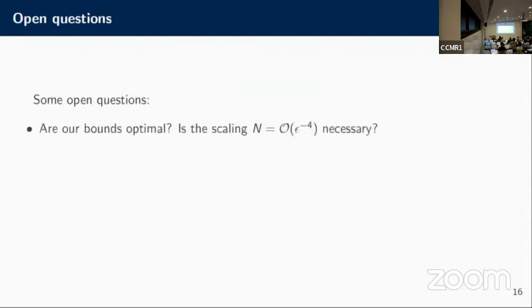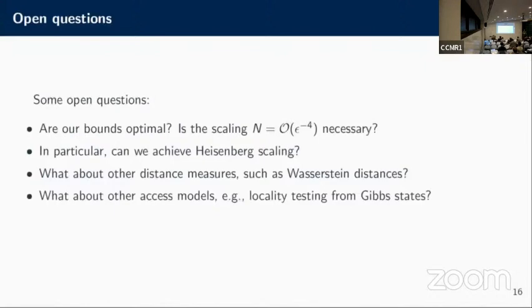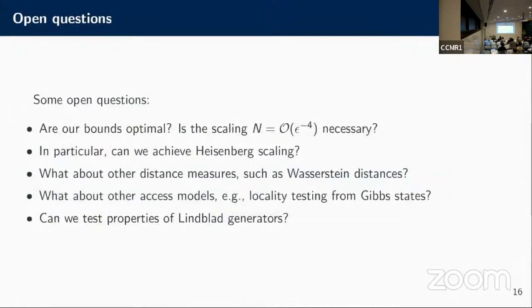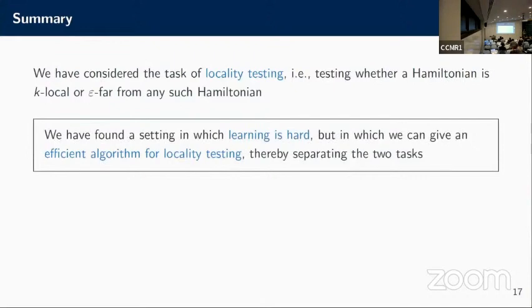If you're now fascinated by this topic and you want to work on this as well, then here's some open questions. Are our bounds optimal? We don't know. For example, is the scaling of epsilon^{-4} necessary, or can you do better? Can you maybe do epsilon^{-2}, epsilon^{-1}? We don't know. Can you achieve Heisenberg scaling? Try other distance measures such as Wasserstein distances, because they are more adaptive than Schatten stuff. And you could ask about other access models, for example, locality testing from Gibbs states. This is what we are currently thinking about, but we don't know yet. And since Daniel likes Lindblad generators, you could try to do this for Lindblad generators, but we have absolutely no idea how to do it yet. That's it. The summary: we talked about locality testing. We wanted to know whether a Hamiltonian is k-local or epsilon far from it. And we found a setting in which learning is hard, but for testing we can actually give an efficient algorithm. And if you want to know more about this, look at this paper. Thanks.